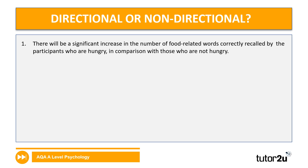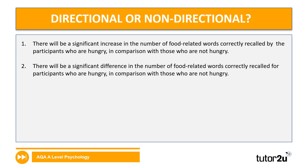Let's take a look at the answers. First one: there will be a significant increase in the number of food related words correctly recorded by the participants who are hungry in comparison with those who are not hungry. Hopefully you got directional because the words 'significant increase' are used. Number two: there will be a significant difference in the number of food related words correctly recorded for participants who are hungry in comparison with those who are not hungry. That's a non-directional hypothesis — the non-directional version of the one before.